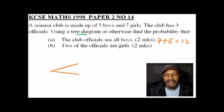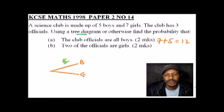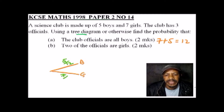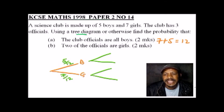In the tree diagram, a boy may be chosen or a girl may be chosen. Since we have five boys out of 12 members, the probability that a boy is chosen is 5 out of 12. We have seven girls, so the probability of choosing a girl is 7 over 12. Since we need three officials, we go three steps in the diagram.